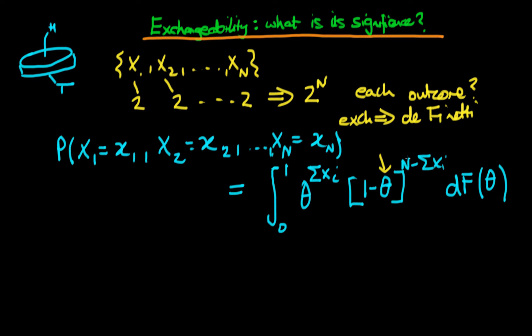De Finetti's representation theorem tells us we don't need to specify a probability to each particular outcome. We're okay just to worry about a particular single parameter which is called theta, for the case of binary outcome variables here.